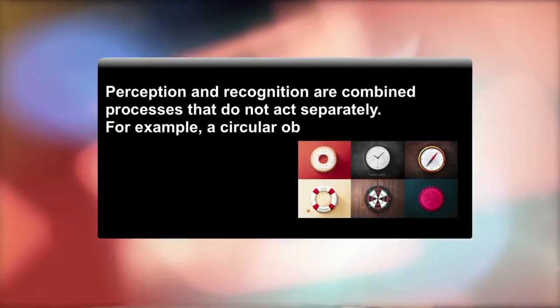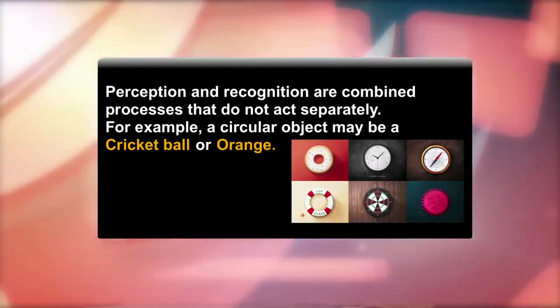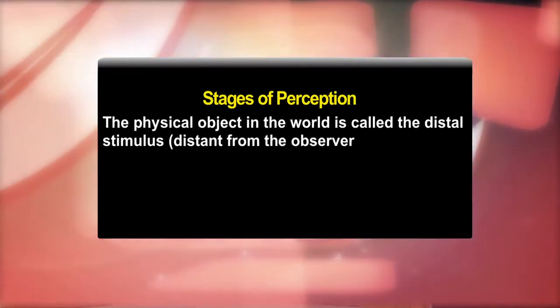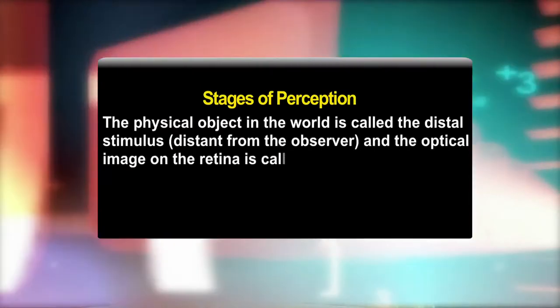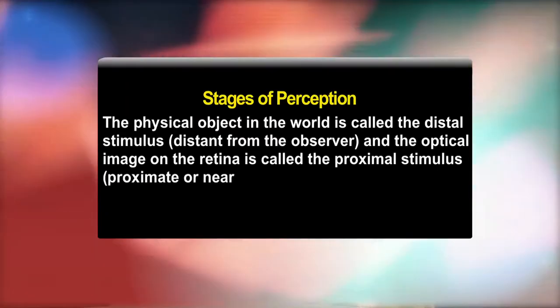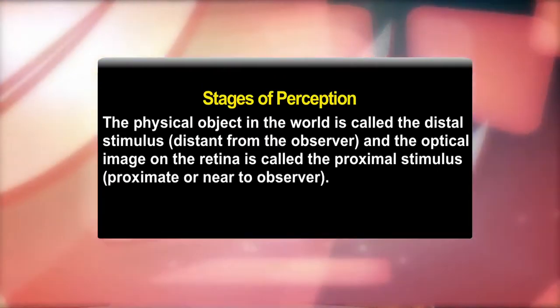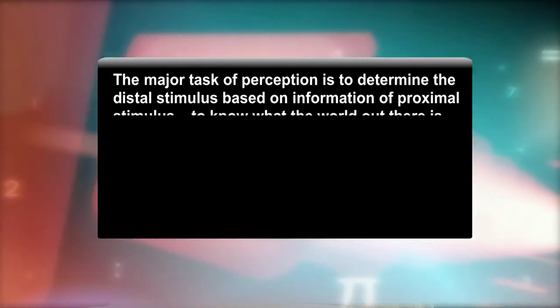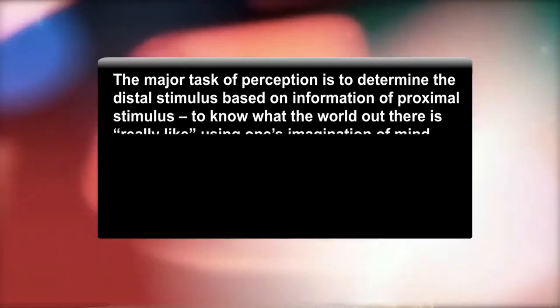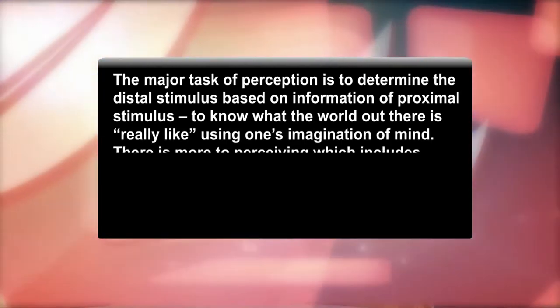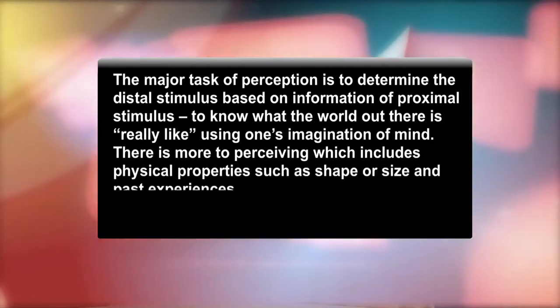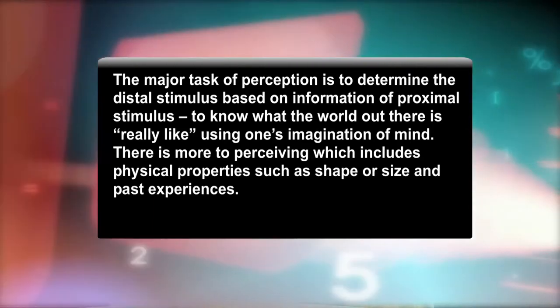Perception and recognition are combined processes that do not act separately — for example, a circular object may be a cricket ball or an orange. The physical object in the world is called the distal stimulus, while the optical image on the retina is called the proximal stimulus. The major task of perception is to determine the distal stimulus based on information from the proximal stimulus, and there is more to perceiving than just physical properties such as shape or size — past experiences also play a role.